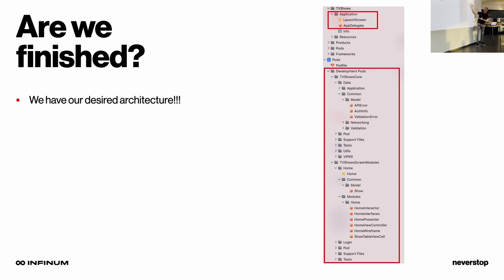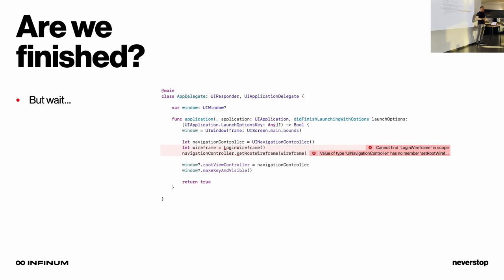We have our desired architecture and it looks pretty beautiful. The TV Shows main application is stripped down to only a few files: the application folder includes just the launch screen, the app delegate, and the resources. Inside the development pods we have the desired structure and it looks great. But we have a problem — inside the app delegate, it cannot find the login wireframe, because it's in a different module.